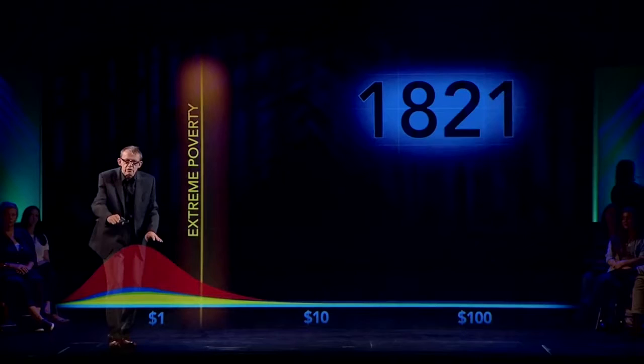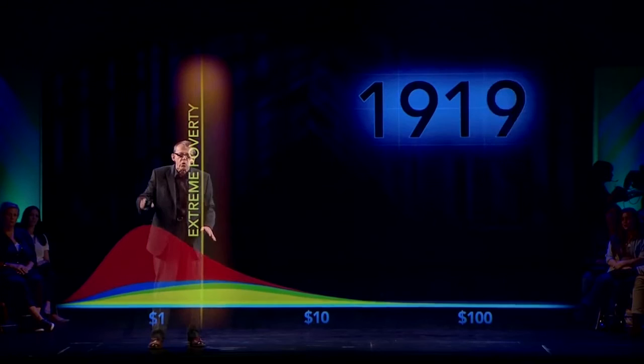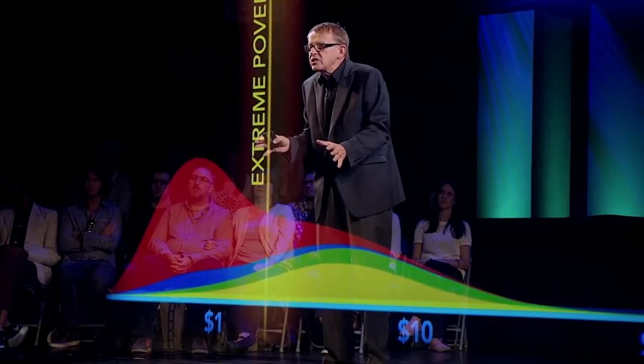Now I'm going to show you what has happened. I start the world, and look — with the Industrial Revolution, the population grew and incomes expanded, mainly because of increased income in Europe and America.